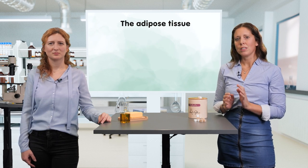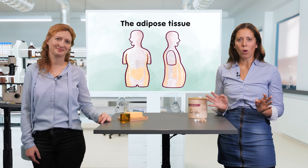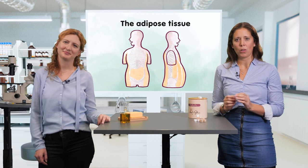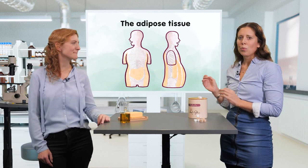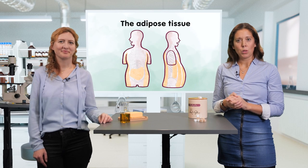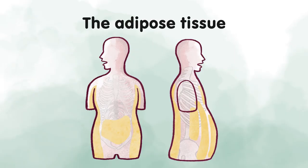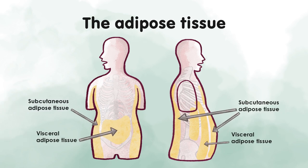The adipose tissue is distributed almost throughout the whole human body. Here we see all the adipose tissue depositions. However, there are two major ones: the visceral and subcutaneous adipose tissue. Visceral fat lays in the spaces between the abdominal organs. Subcutaneous fat is located between the skin and the outer abdominal wall.